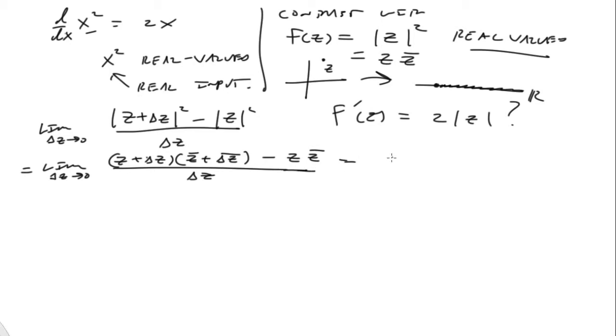So recall, though, that the magnitude or the modulus of z could be written as z z bar. Okay, that's a nice way to write this. So let's see if we can use that form of the solution to get some traction here. So this becomes (z + delta z)(z bar + delta z bar) minus z z bar all over delta z. Okay, so that becomes, so limit delta z goes to zero, and it becomes z z bar.